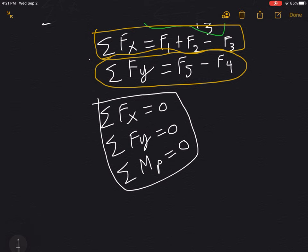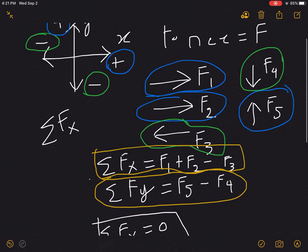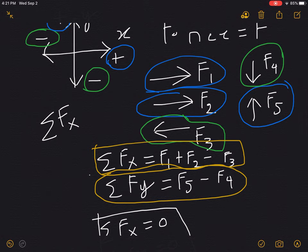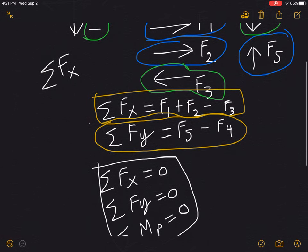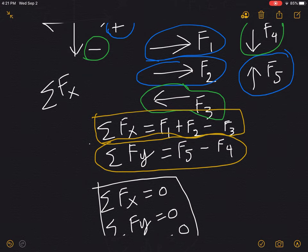So that would mean that if I were to apply these equations in the problem that we have seen here, that's more of an example. So if we were to make summation Fx equals 0, then the sum of F1 and F2 has to be equal to the sum of F3.